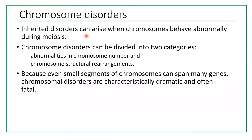Inherited disorders can arise when chromosomes behave abnormally during meiosis. Chromosome disorders can be divided into two categories: abnormalities in chromosome number and abnormalities in chromosome structure — structural rearrangement. So either the zygote ends up with the wrong number of chromosomes or the chromosome arrangement is not correct. Because even small segments of a chromosome can span many genes, chromosomal disorders are characteristically dramatic and often fatal.